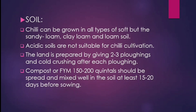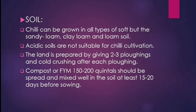Acidic soils are not suitable for Chilli cultivation. The land is prepared by giving 2 to 3 ploughings and clod crushing after each ploughing. Compost or farmyard manure of 150 to 200 quintals should be spread and mixed well in the soil at least 15 to 20 days before sowing.